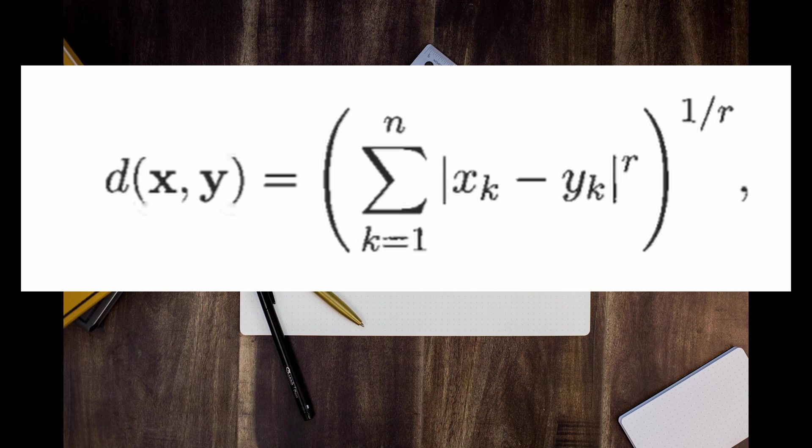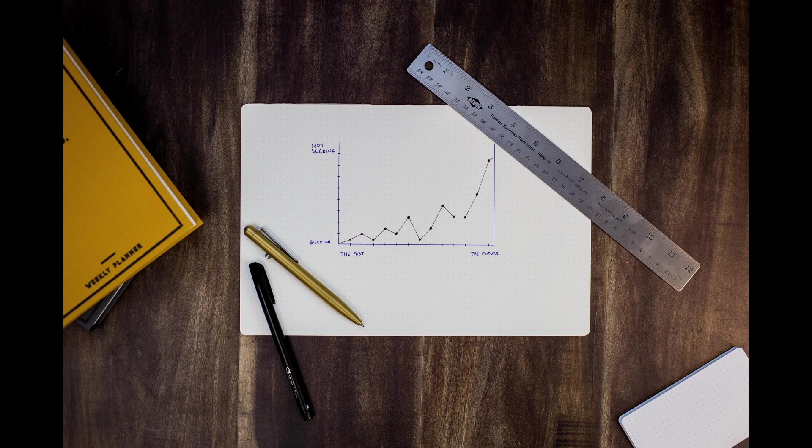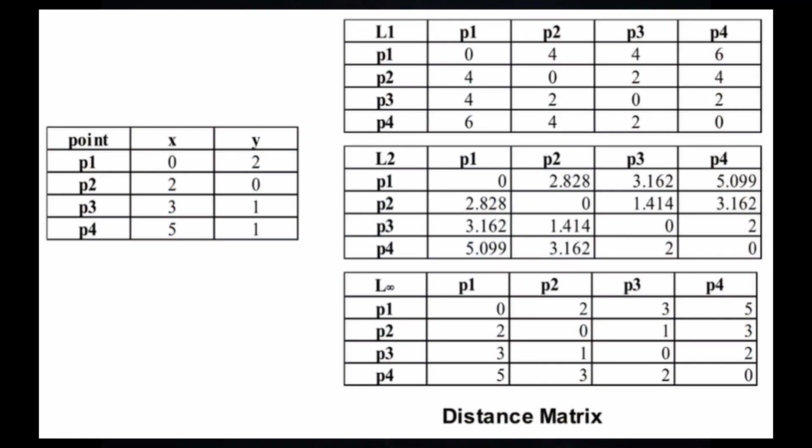To make it calculable, we put a limit on it as shown on screen. Let's look at an example: we have another two-dimensional point space, and we calculate L1, L2, and L-infinity distances for these points. The logic is the same — higher distance means more dissimilar, and lower distance means more similar.